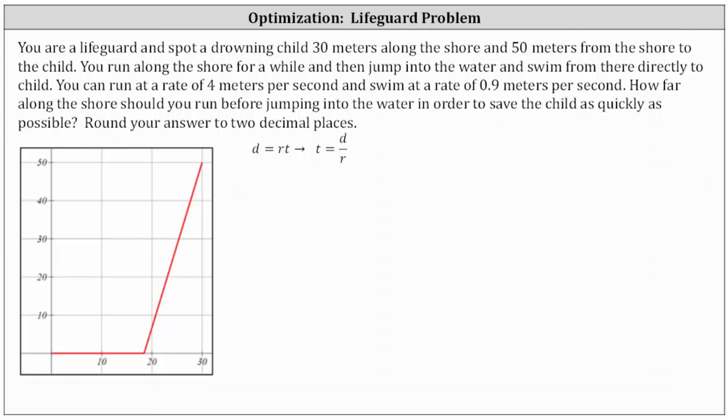You're a lifeguard and spot a drowning child 30 meters along the shore and 50 meters from the shore to the child. So if we look at the graph below, that means you would be at the origin, point (0, 0).